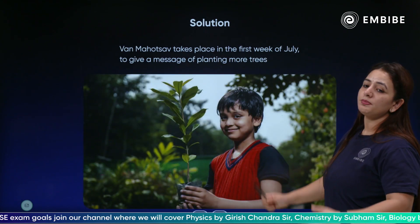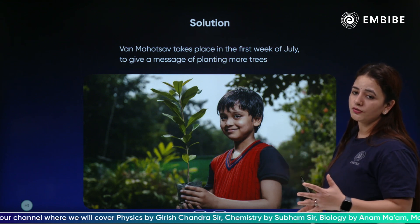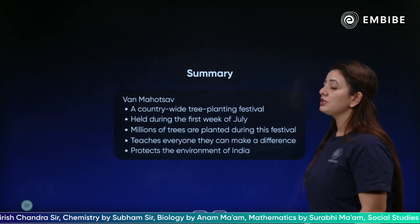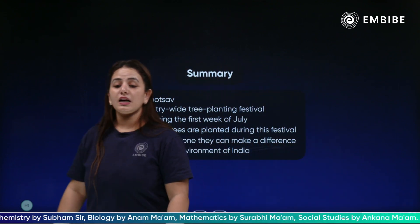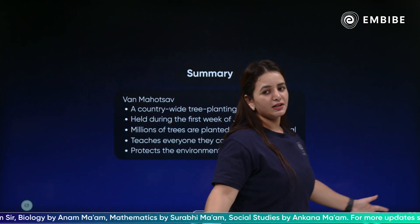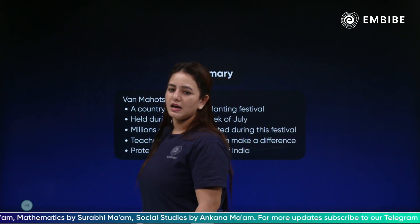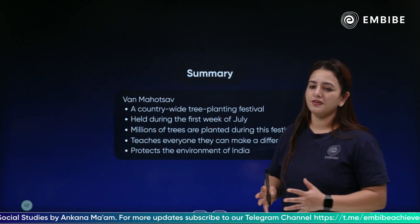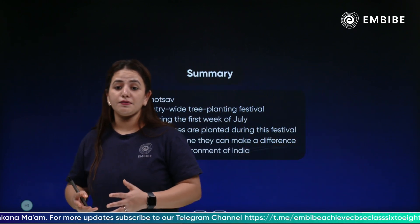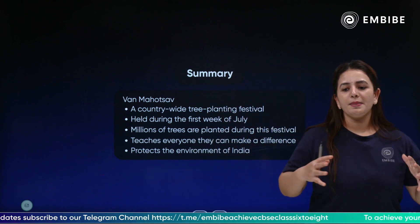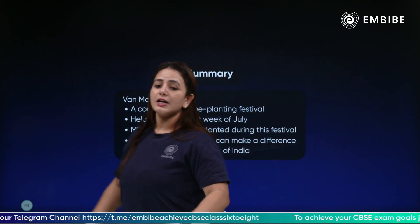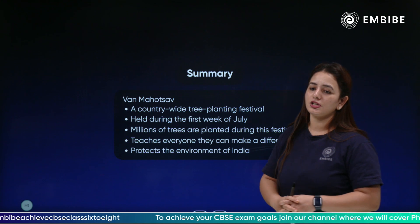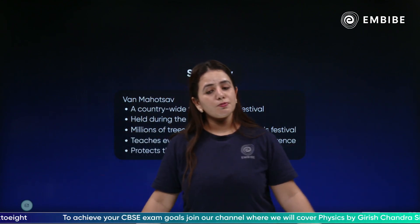Van Mahotsav takes place in the week of the first to the seventh of July, and the message is to plant more and more trees. It is a countrywide tree planting festival during the first week of July. Millions of trees are planted, teaching that everyone can make a difference. Even a small step creates a big change, conserves the environment and forests, and reverses the effects of deforestation.